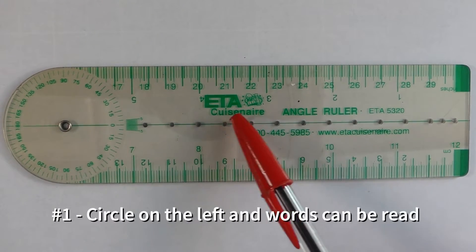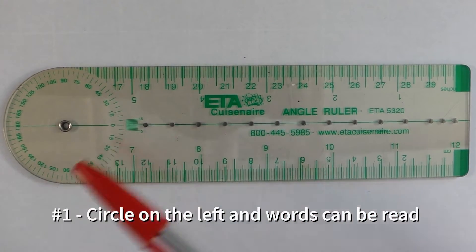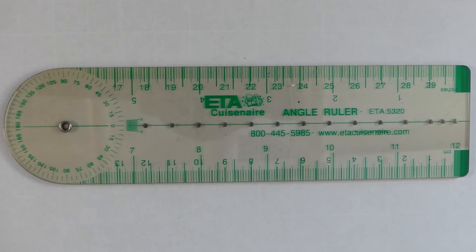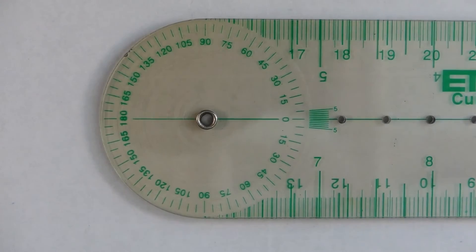All right, our first thing we're going to look at are parts and features of this angle ruler. So when you look at this, it's important to make sure we're looking at it correctly. Circles on the left, and then the actual words and letters need to be correct, so not upside down or backwards.